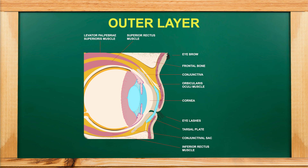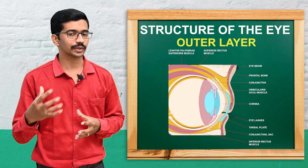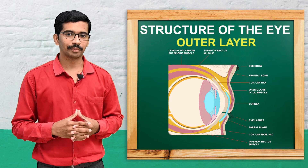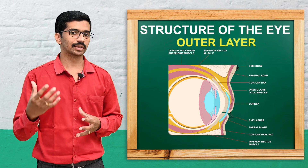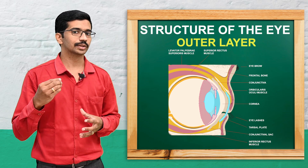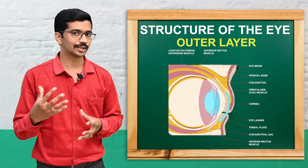The anterior 1/6th of the sclera is transparent and that is termed as the cornea. Light enters into our eyeball through this cornea. The cornea is made of non-keratinized stratified squamous epithelial cells.